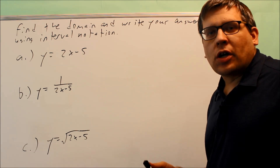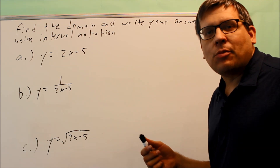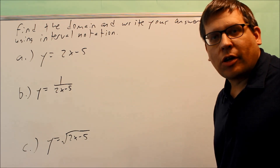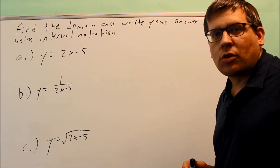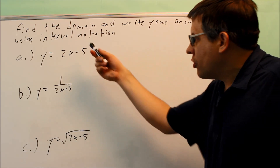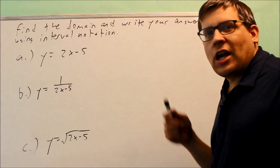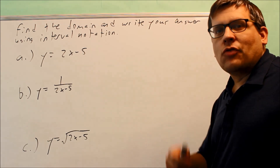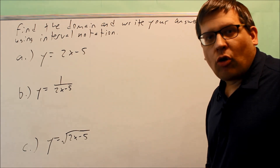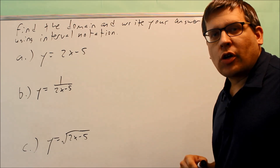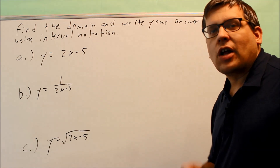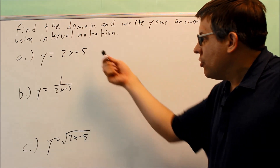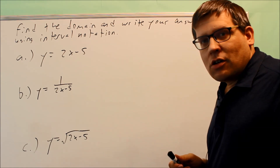What do we mean by defined? Defined means that we're not dividing by 0 and we're not taking the square root of a negative number. So when you look at these, if there's any number that causes division by 0 or a square root of a negative number, that number cannot be allowed in your domain.